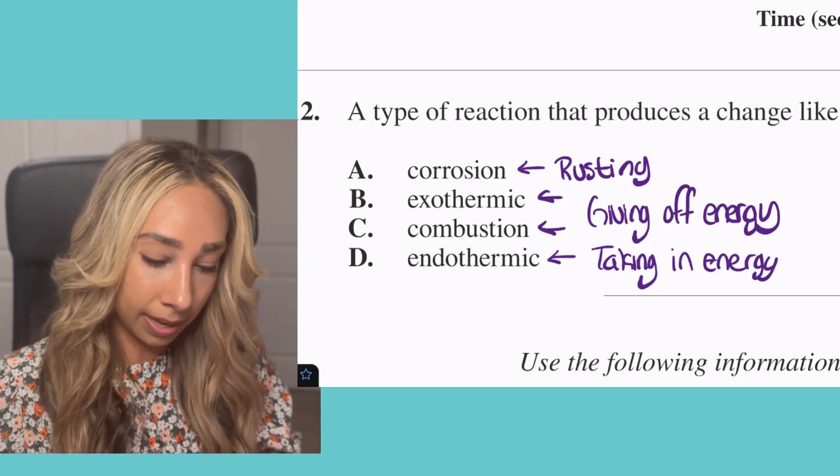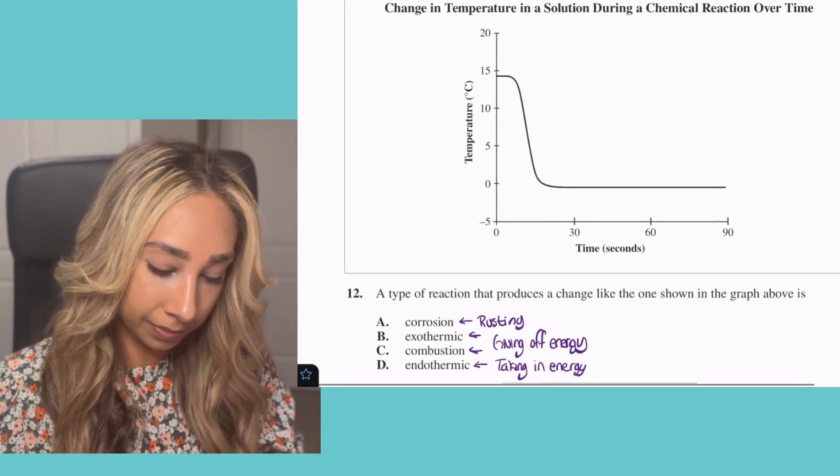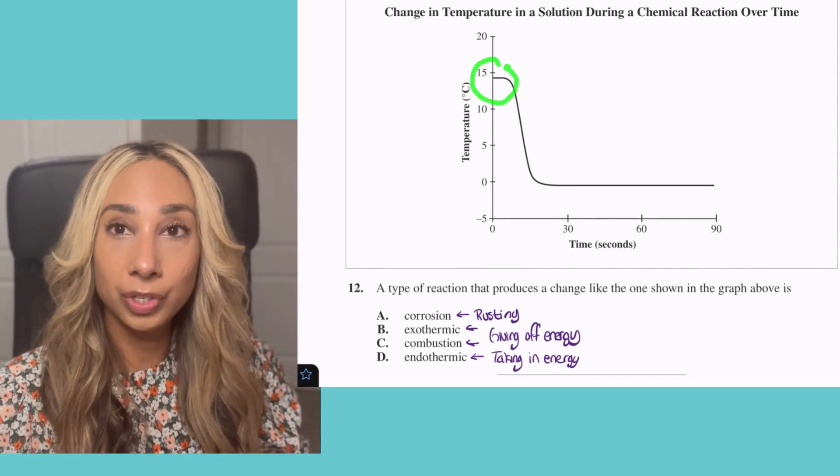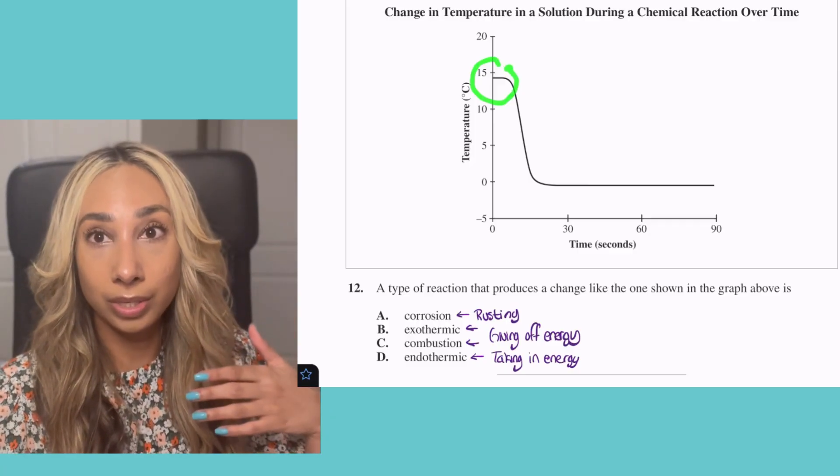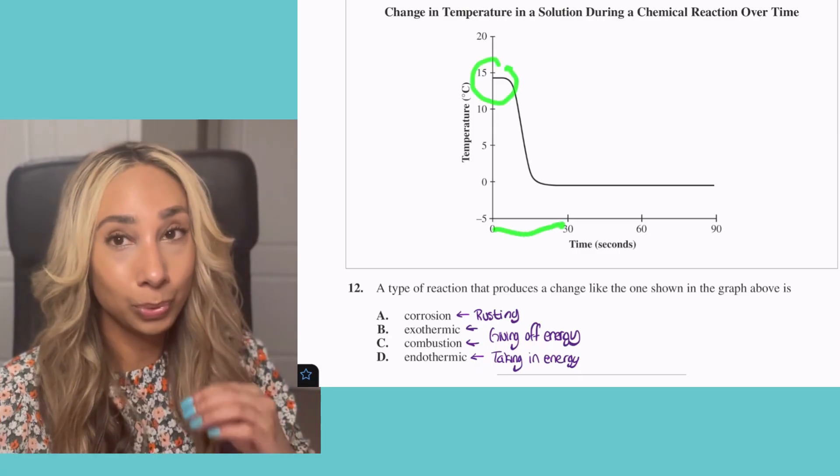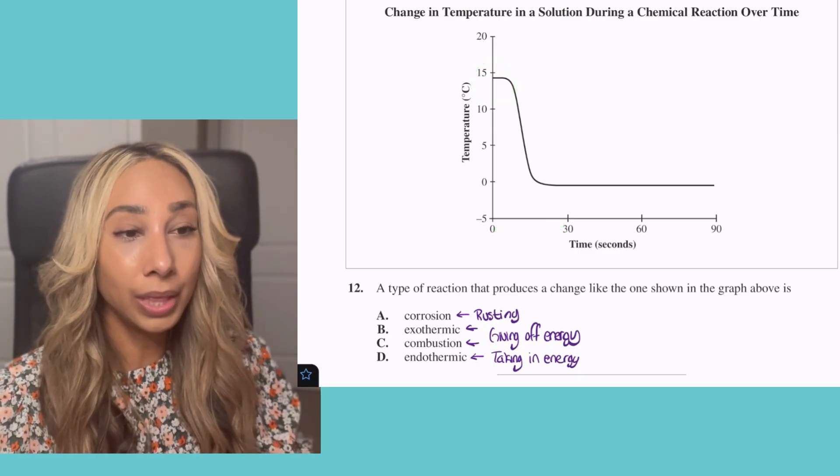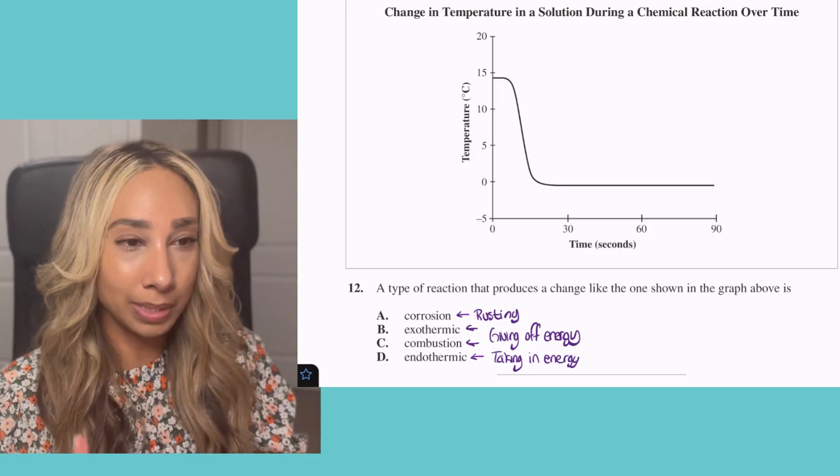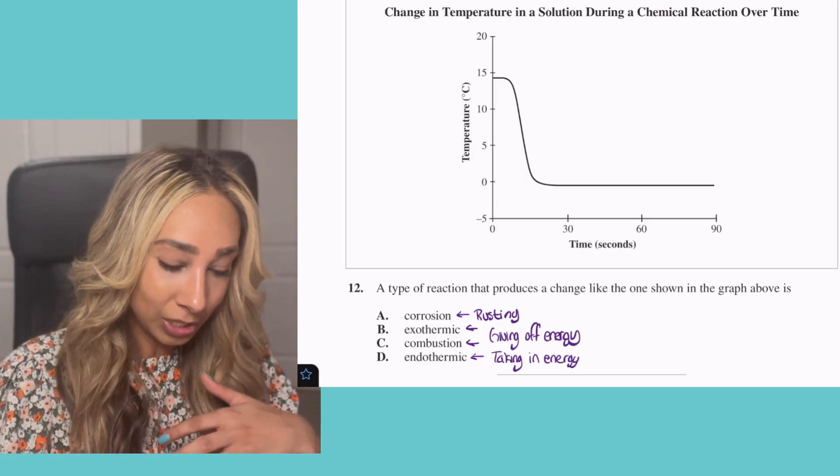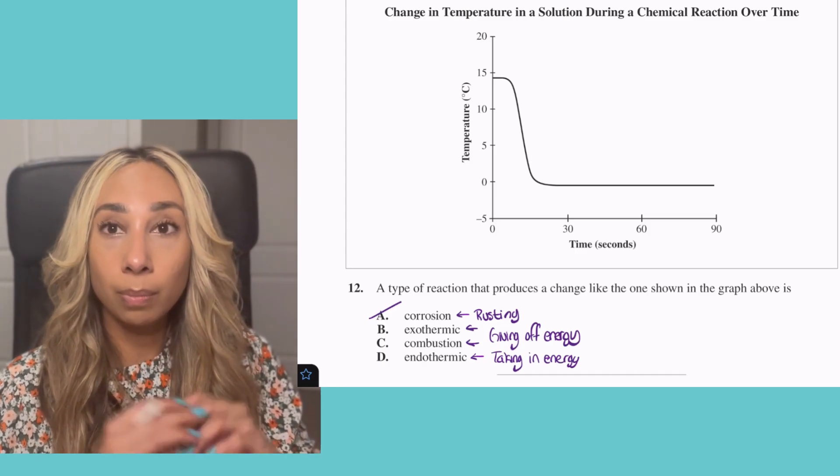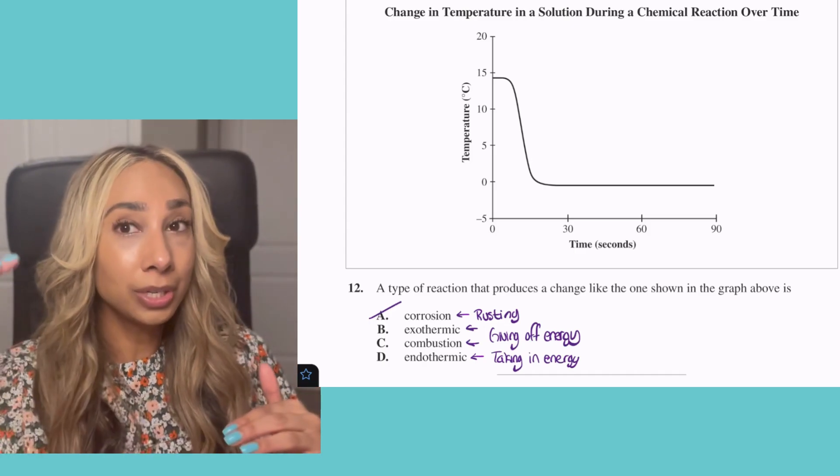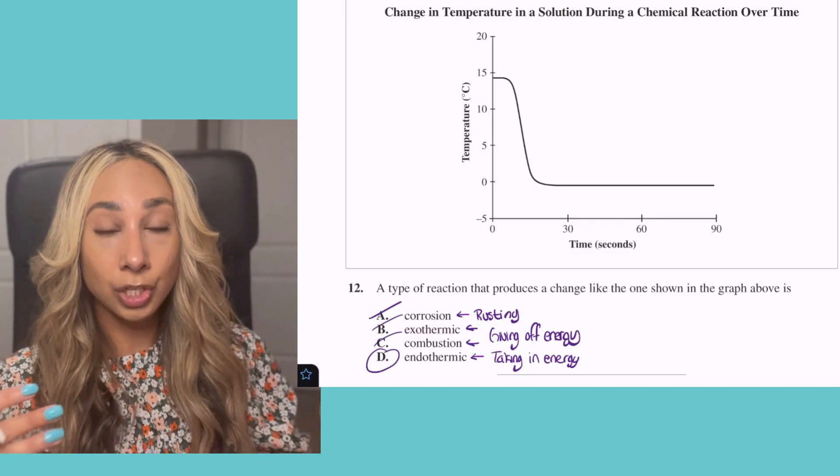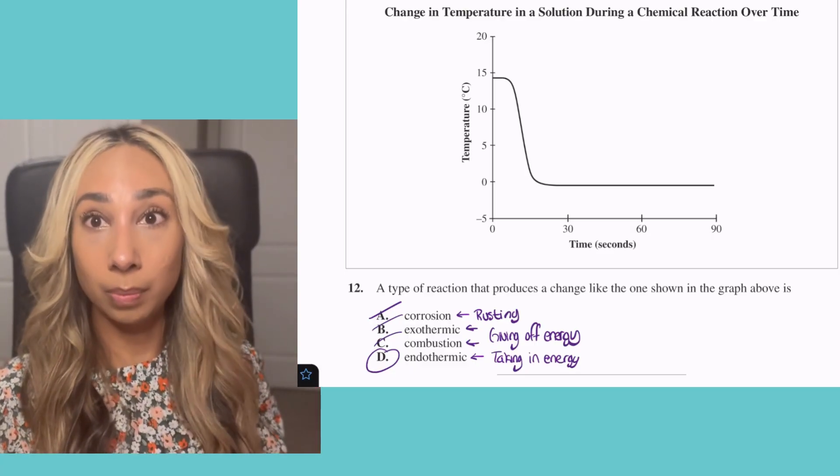What that means is we're looking at our different substances here. We're starting off at about 15 degrees Celsius and then we're reducing our temperature in a pretty short time span. Options A through C, rusting happens sometimes temperature dependent, but it's not going to happen within 30 seconds. Options B and C are both giving off energy, meaning temperature should increase, not decrease. That only leaves us with D. It's an endothermic reaction taking in energy from its surroundings and it's going to appear to be cold.